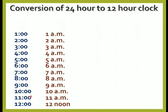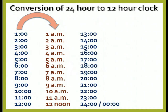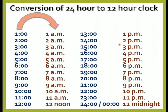After 12 hours we have 13 hours. How do we write 13 hours in 12-hour clock? We write it as 1 PM. Then 14 hours as 2 PM, 15 hours as 3 PM, 16 hours as 4 PM, 17 hours as 5 PM, 18 hours as 6 PM, 19 hours as 7 PM, 20 hours as 8 PM, 21 hours as 9 PM, 22 hours as 10 PM, 23 hours as 11 PM, and 24 hours or 0 hours we write as 12 midnight in 12-hour clock.